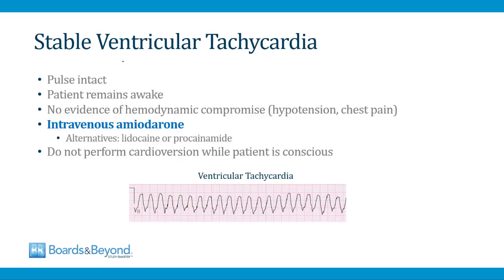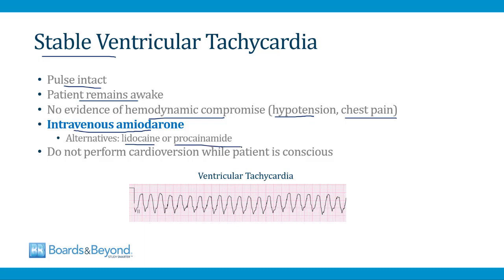Now let's talk about ventricular tachycardia in more detail. Some patients who develop ventricular tachycardia are stable — meaning their pulse is intact, the patient remains awake, and they have no evidence of hemodynamic compromise such as hypotension or chest pain. In this situation, you want to administer intravenous amiodarone, or alternatively use other antiarrhythmic drugs like lidocaine or procainamide. The most important thing to remember is that you do not want to perform a cardioversion — you should never administer a shock when a patient is conscious.